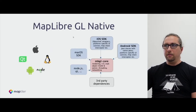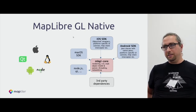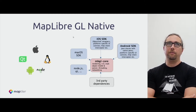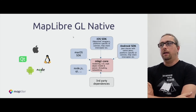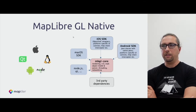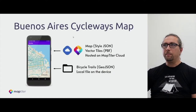MapLibre Native is a library written in C++14. It's a fairly large codebase — it's a bottom-up approach for multi-platform applications. The core library, written in C++, contains everything from the renderer abstraction on top of OpenGL, networking, logging — all written in C++. On top of it there are wrappers for native platforms, for example iOS, Android, but also Qt, Node, and so on.